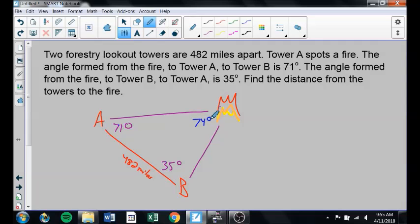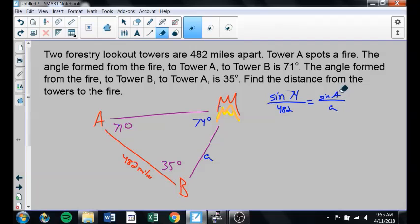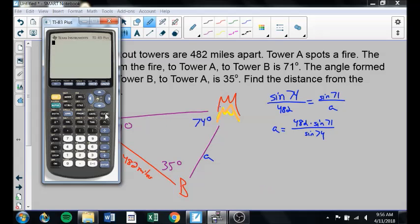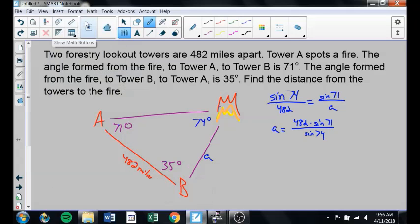This angle here is 74 degrees. Now I have an angle side pair. This angle and this side pair, so I can do the law of sines. The sine of 74 over 482 is equal to, let's do the sine of A over, we'll call this side A. Well, we know that sine of A, that angle, angle A is 71. So I solve this for A. I cross multiply and divide. So A is going to equal 482 times the sine of 71 over the sine of 74. Make sure to close parentheses correctly. Order of operations, 474 feet or miles.